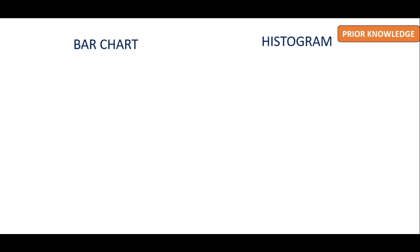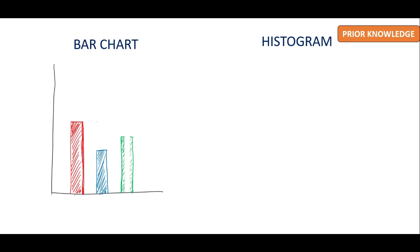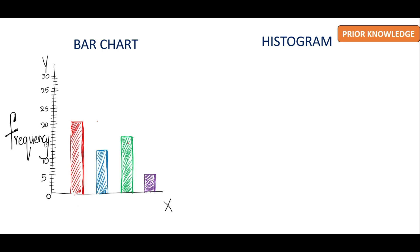Beginning with the bar chart — as the name says, you have bars that are drawn and you have the frequency on the y-axis. For example, consider this to be the number of students who like a particular color in a classroom. If you have the y-axis starting from 0 to 30, to find the number of students who like red, you just read it from the y-axis, which gives you 21. Similarly, blue is 12, green is 16, and purple is 5.